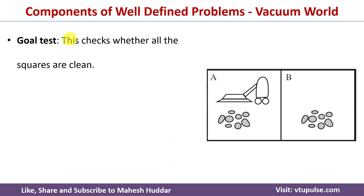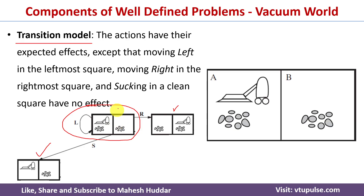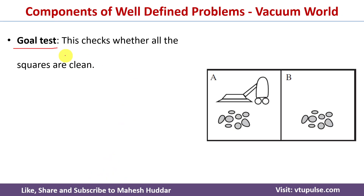The next component is the goal test. Whenever we apply an action and move to a new state, we test whether that new state is the goal state. In the vacuum world, the goal is for both locations to be clean. For example, applying a right action from the starting state is not a goal state because both A and B are still dirty. Applying left keeps the same non-goal state. Applying suck also does not reach the goal state here. We check every resulting state using the goal test.